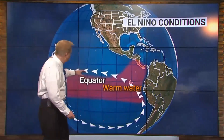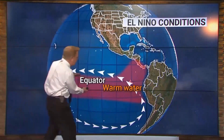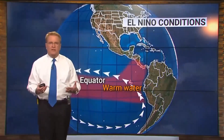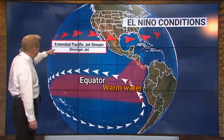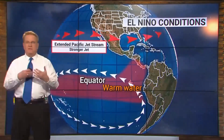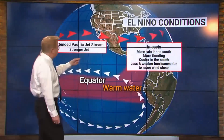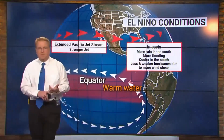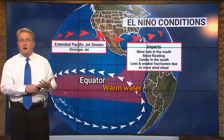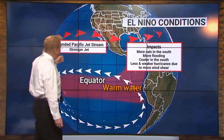In an El Niño year, the airflow is not as strong. The trade winds go way down, and because of that, the warm air out in the Pacific goes back toward the east. When it goes back toward the east, that warm water warms the air above it, and that starts to alter the weather patterns. One of the things it does is cause the Pacific jet stream to get stronger, and that causes more rain across the southern parts of the country — like mudslides in California from that stronger Pacific jet stream.